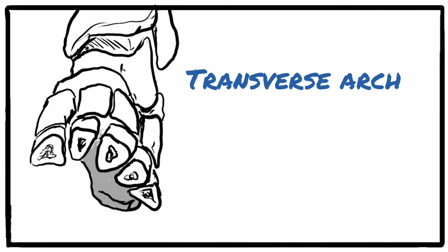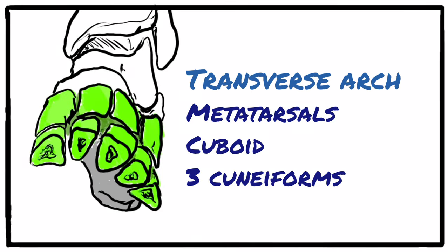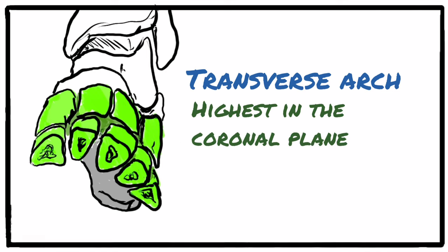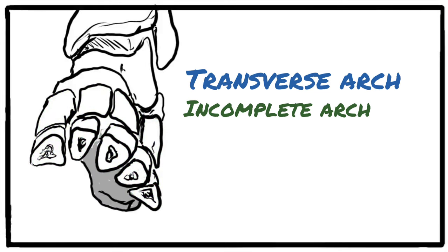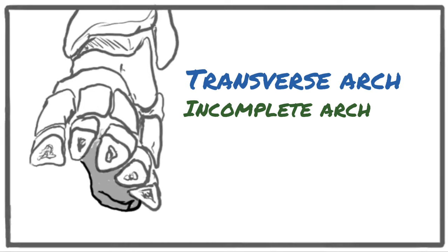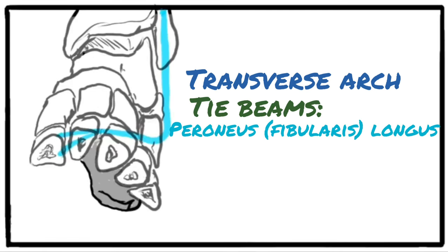The metatarsals, cuboid, and the three cuneiforms are the bones involved in the transverse arch. The posterior transverse arch is the highest in the coronal plane, however it is an incomplete arch because only one pillar touches the ground. The other pillar rests on the medial longitudinal arch. The peroneus longus acts as a tie beam, and the dorsal interossei and the transverse head of adductor hallucis form the slips.